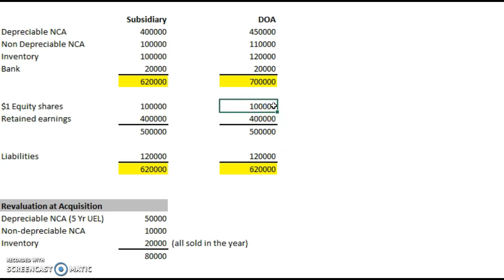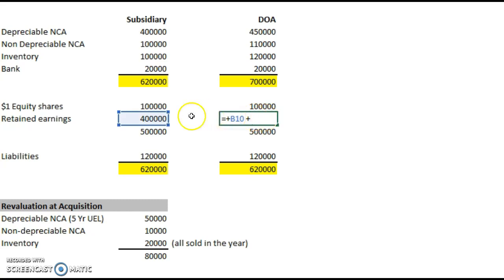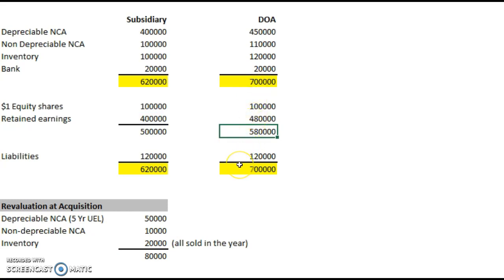We can't adjust equity because nothing's happened to equity, and we can't adjust the liabilities either. Our only option is to revalue retained earnings, which is a calculated figure anyway. We add to our brought-forward retained earnings the total upward revaluation of all the assets — adding 80 to that side enables the balance sheet to balance. This means retained earnings at the date of acquisition is now increased, which impacts the goodwill calculations and the retained earnings calculations for the consolidated statement of financial position.